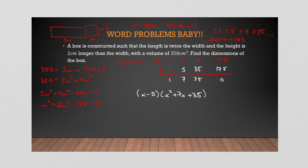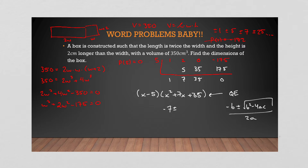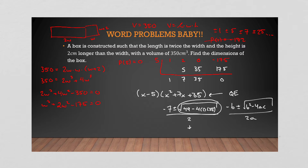We have the factored form (w − 5)(x² + 7x + 35). Now this quadratic isn't easily factorable, so we use the quadratic formula: (−b ± √(b² − 4ac)) / 2a. Plugging in: −7 ± √(49 − 4(1)(35)), which gives −7 ± √(−91). That's a negative discriminant — no real solution from the quadratic.